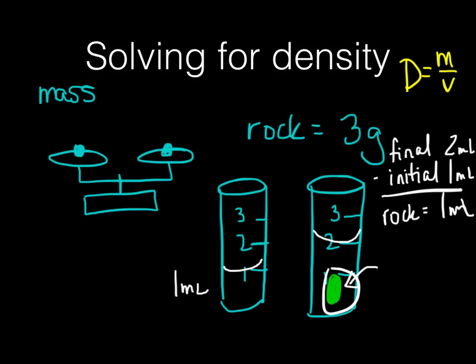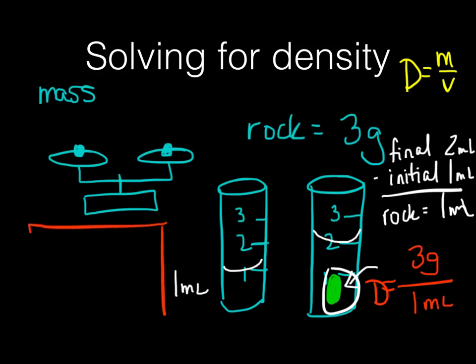Now we can find the density. We know the mass is 3 grams and the volume of the rock is 1 milliliter, so we plug this into the formula: 3 grams over 1 milliliter equals density. Dividing gives us a total density of 3 grams per milliliter. That's the density of our rock.